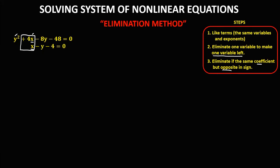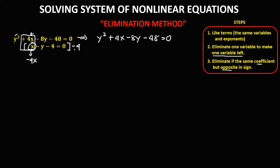In the given system, since the first equation has positive 4x, the x in the second equation must become negative 4x. To make this negative 4x, we need to multiply the whole second equation by negative 4. Then copy the first equation: y squared plus 4x minus 8y minus 48 equals 0. For the second equation, we distribute negative 4 to every term.